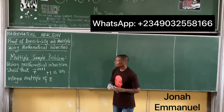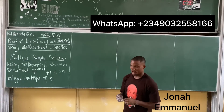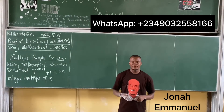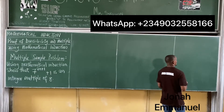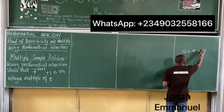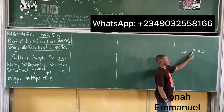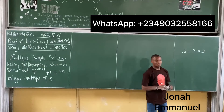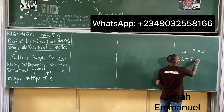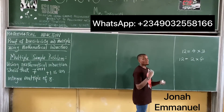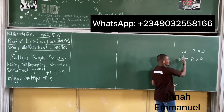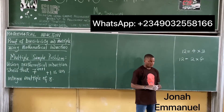Now let's look at proving multiples using mathematical induction, following the same 5-step process. First, let's explain what a multiple is. 12 is a multiple of 4 because 12 = 4 × 3. Similarly, 12 is a multiple of 2 because 2 × 6 = 12. The idea is that one number multiplies another whole number to produce the given number — that's the concept of a multiple.